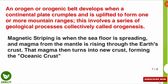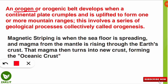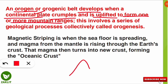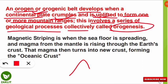An orogen or orogenic belt develops when a continental plate crumples and is uplifted to form one or more mountain ranges. This involves a series of geological processes collectively called orogenesis. So when upliftment of continental plates occurs, orogenic belts, which are mountain ranges, are formed through this orogenesis process.